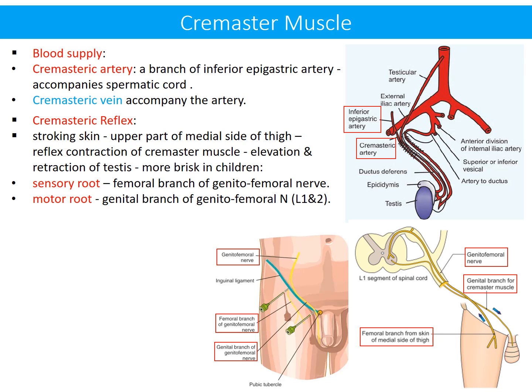The cremasteric reflex arc is formed by two roots. The sensory root is formed by the femoral branch of the genitofemoral nerve, and the motor root by the genital branch of the genitofemoral nerve. As the genitofemoral nerve has a root value of L1 and L2, an upper motor neuron lesion above the L1 segment of the spinal cord leads to loss of the reflex.